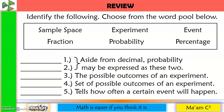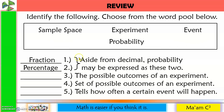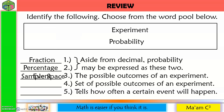Let's have a quick review on the basics of statistics and probability. Identify the following, choose from the word pool below. Aside from decimal, probability may be expressed as fraction and percentage. The possible outcomes of an experiment is called an event. The set of possible outcomes of an experiment is called sample space. It tells how often a certain event will happen — that is probability.